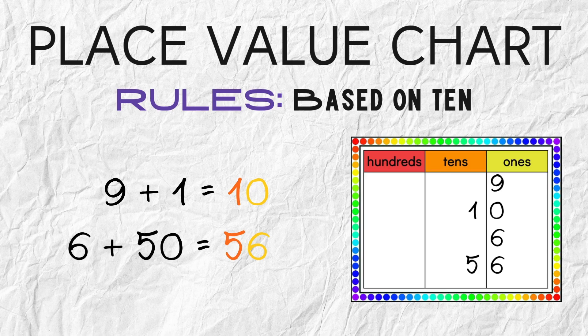Look at this place value chart and the addition. If I have just nine, the nine can go in the ones place. But when I add one, I have ten — I have to take that bundle of ten and move it over to the tens place, and now I have zero ones. So nine plus one is ten. Now look at the next problem: if I just have six, the six can go in the ones place, but once I add 50, I can't put 50 in the ones place. The five in the number 50 means five bundles of ten, so I put the digit five in the tens place. Six plus 50 is 56.